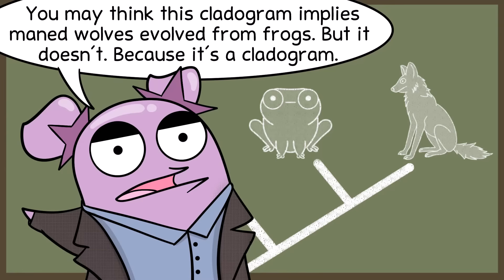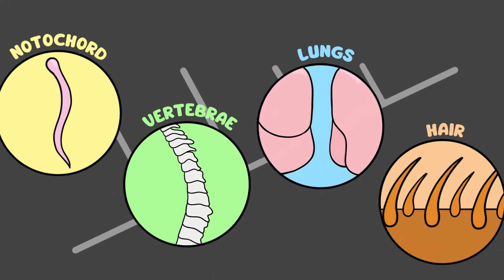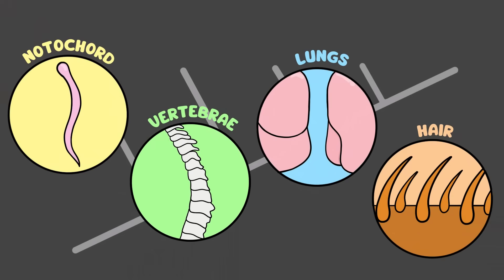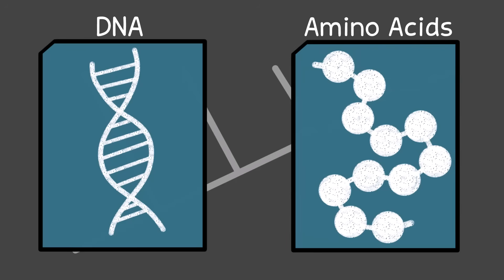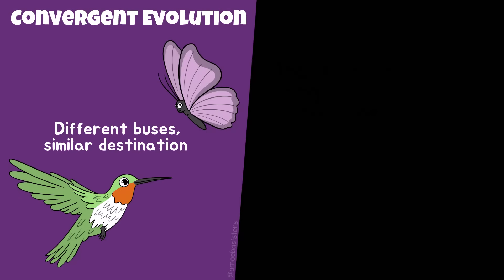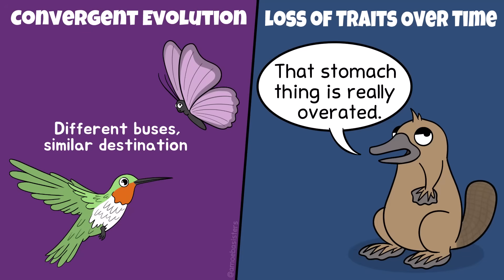But when looking at a cladogram, students sometimes get a misconception. This cladogram does not support, for example, that the maned wolf evolved from a frog. Rather, they share a common ancestor. Remember, this cladogram is a hypothesis based on shared characters. But there are types of evidence we could use to build a better model — molecular evidence such as DNA or amino acid sequence data. That matters because there are some events, such as convergent evolution or loss of traits, that could happen along the way and make a cladogram inaccurate, with the need to make some changes.